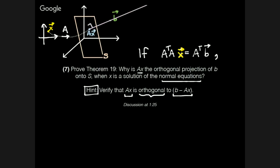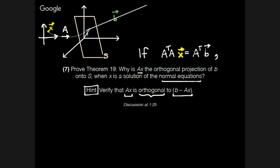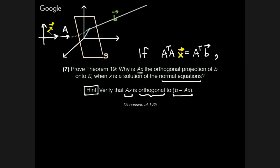And the hint is that in order to do that, it suffices to show that the vector Ax itself, so that's the vector that points from the origin out to Ax, we can show, or you can show, that that vector is perpendicular to the vector pointing from Ax to B.